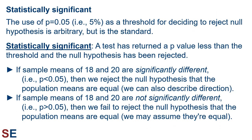The use of a p-value of 0.05, that is 5%, as a threshold for deciding to reject the null hypothesis is arbitrary, but it's the standard. The term 'statistically significant' is a technical phrase used to indicate when a test has returned a p-value less than the threshold and the null hypothesis has been rejected. For example, if we have sample means of 18 and 20 and they are significantly different — our t-test gave us a p-value less than 0.05 — then we reject the null hypothesis that the means are equal, and we can say which mean appears to be larger based on the sample means. On the other hand, if the sample means are not significantly different — p-value larger than 0.05 — then we fail to reject the null hypothesis. We may assume they're equal, but we haven't proven it; what we've really done is looked for evidence that they weren't equal and didn't find it.